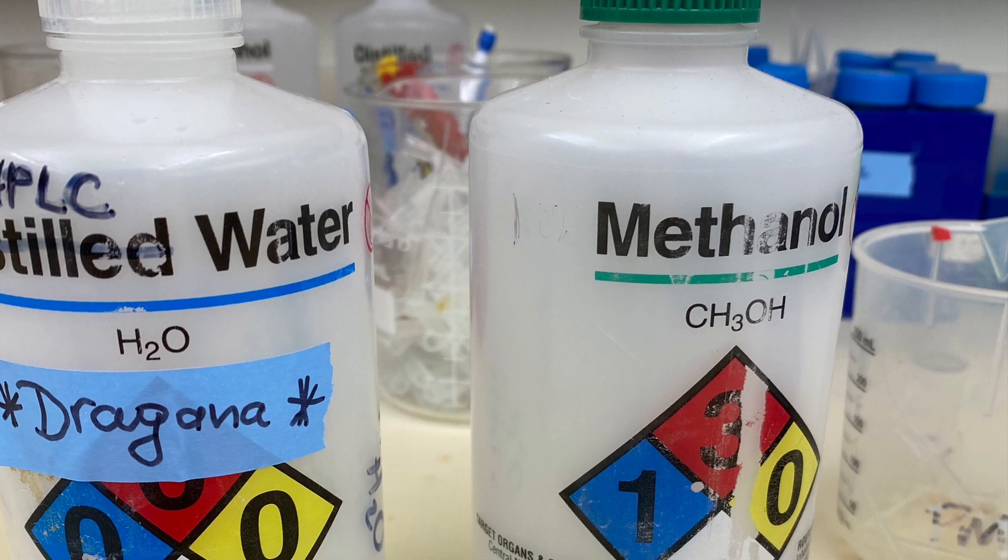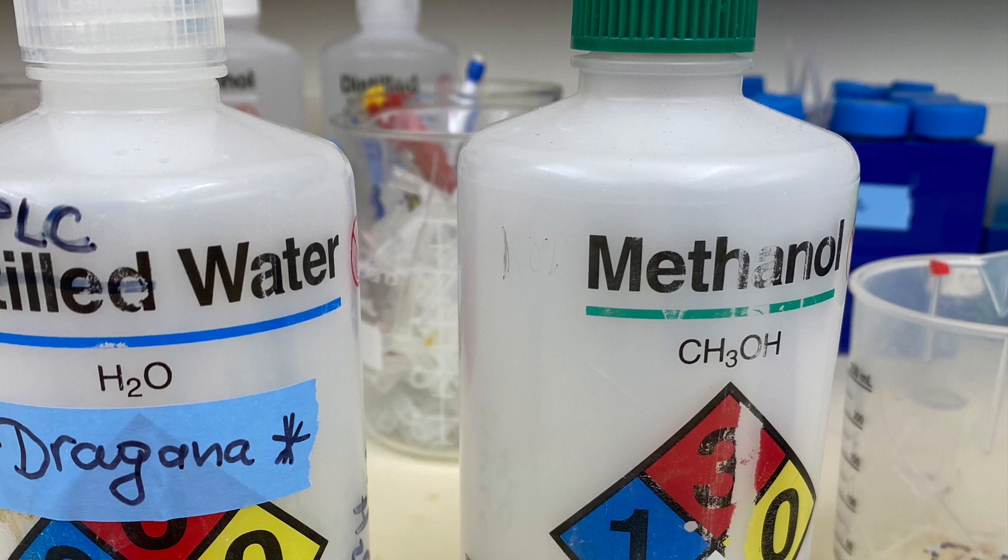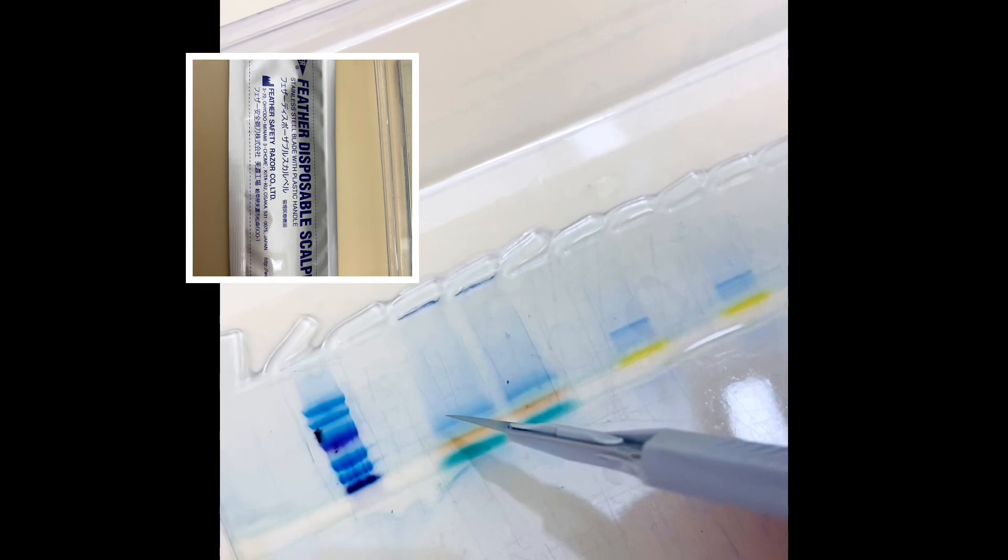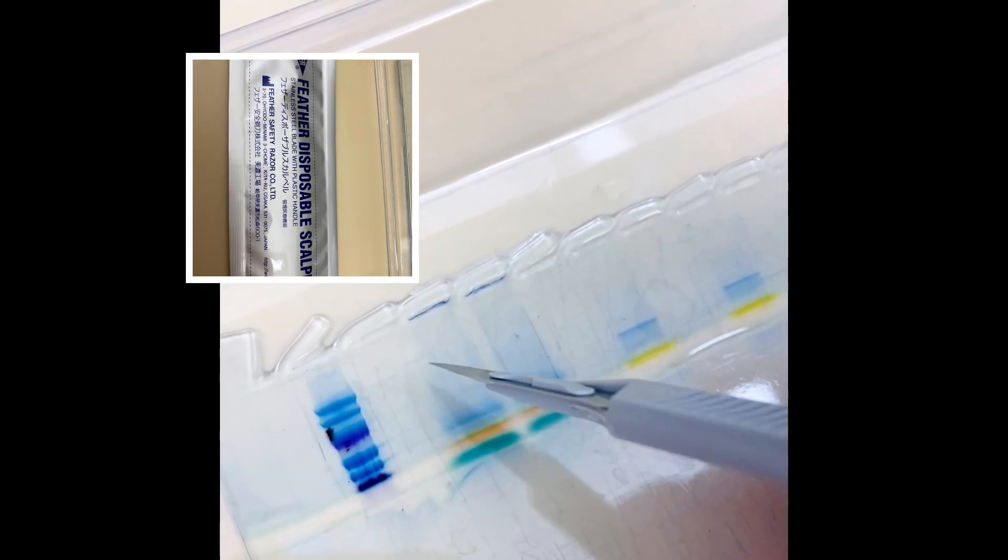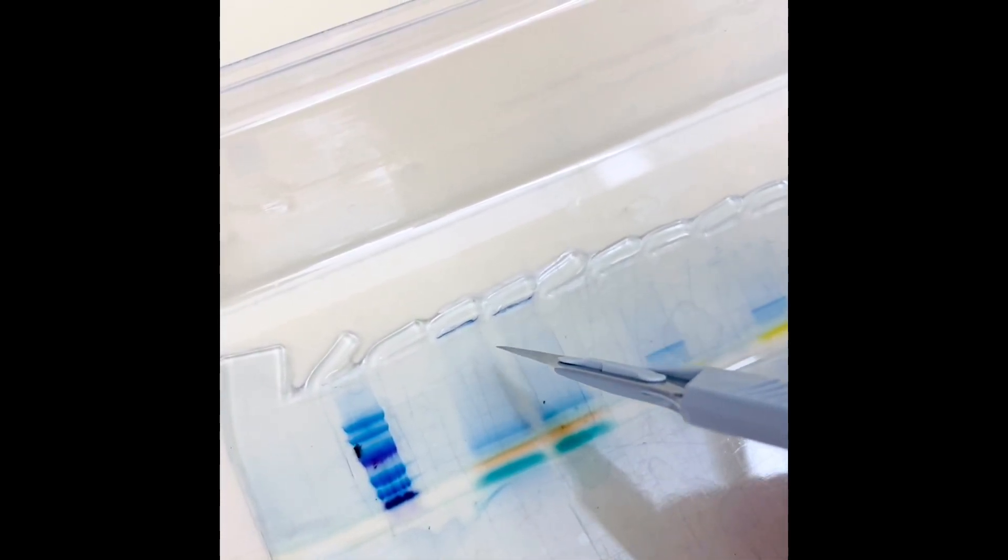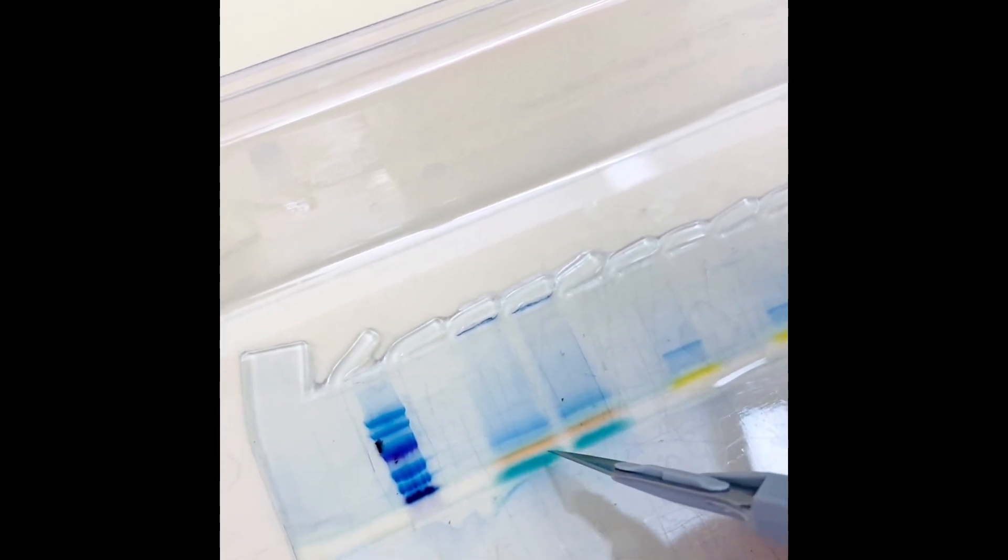To cut the bands out you will need HPLC grade water, methanol and the scalpel. Between cutting each lane or band you want to clean your scalpel with water, methanol and then water again. When you cut your gel out and put it in the tube make sure, and this is very important, to cut that gel piece into little cube pieces using your scalpel.